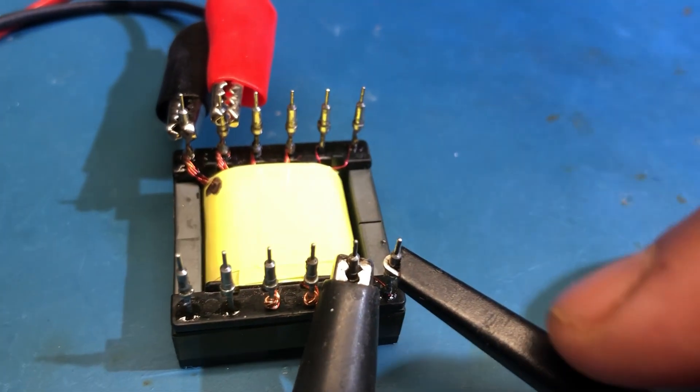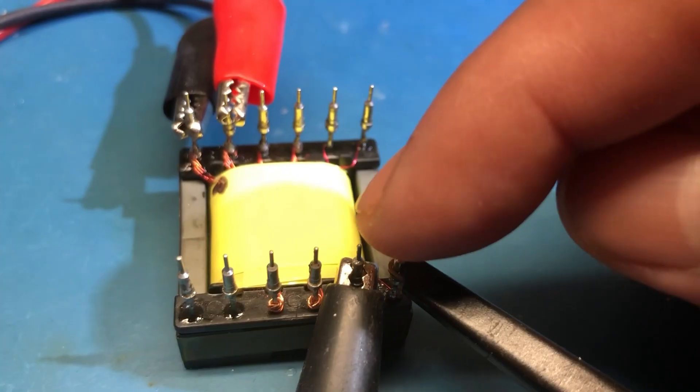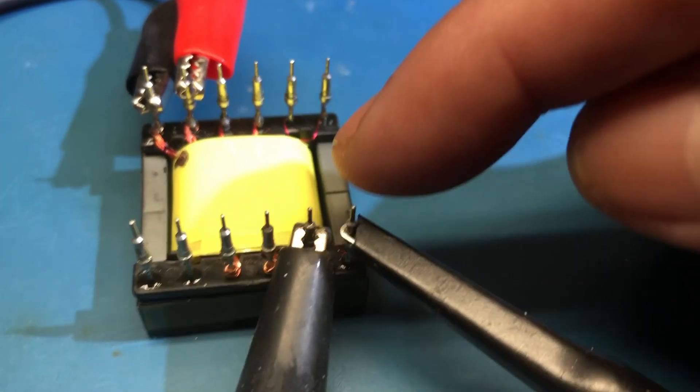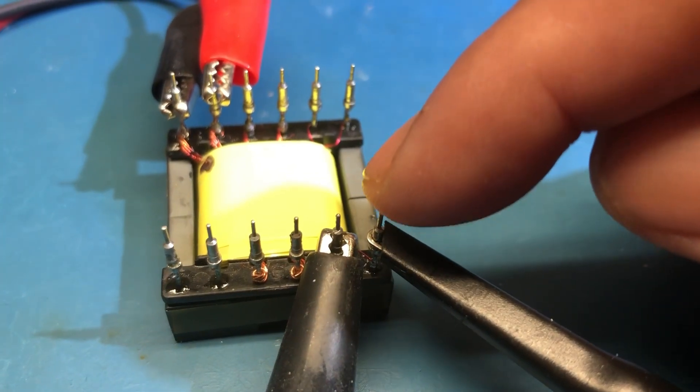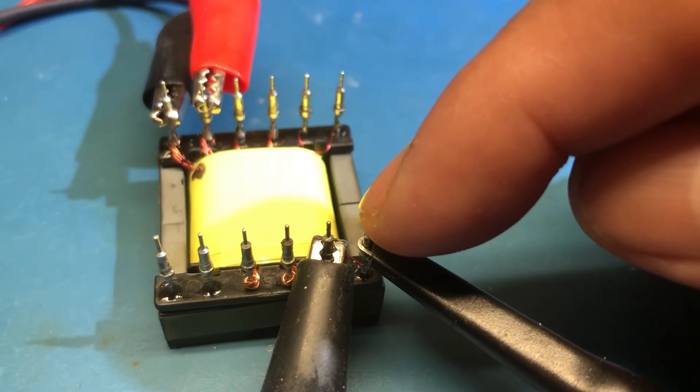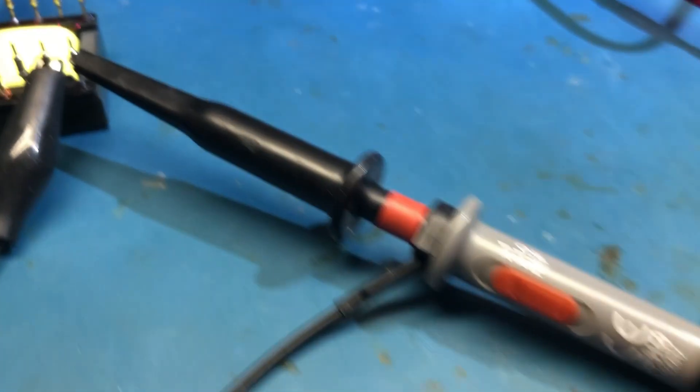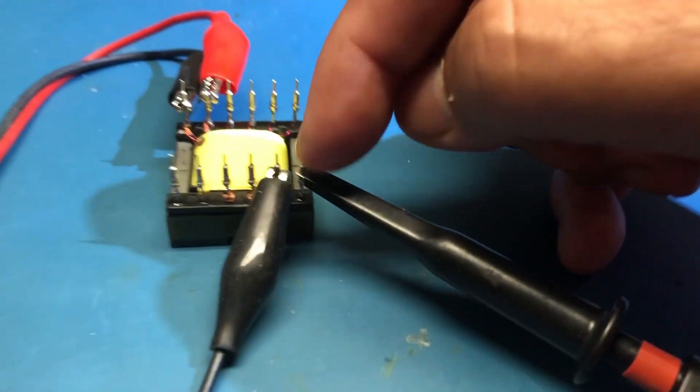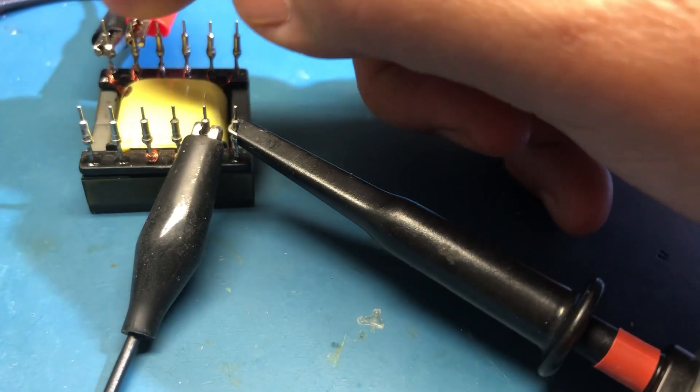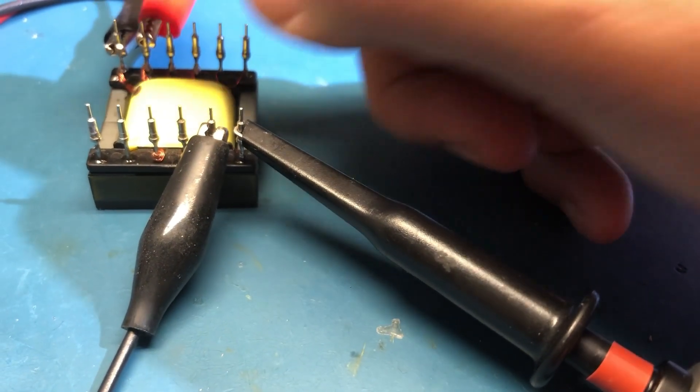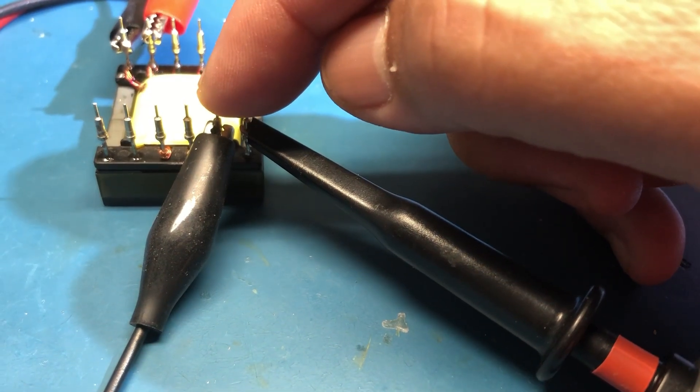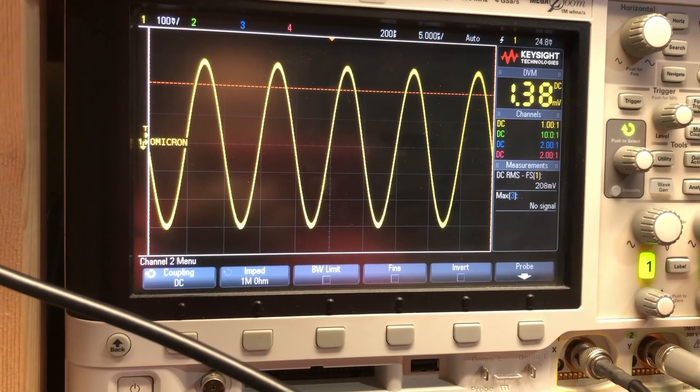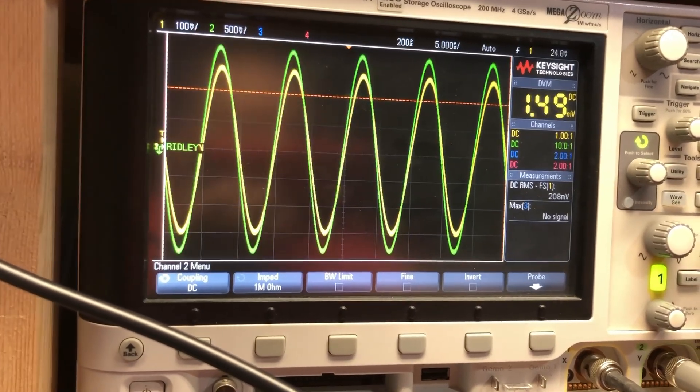What you want to do is on this particular secondary, I want to know which is the dotted one. So if you have a dot, you want this to be the dot. To confirm if it is the dot, we put a scope probe and we connect this to channel 2. Remember, this is channel 1, this is channel 2.